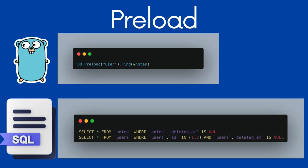Here it translates to two queries. The first one queries all entries from the notes table. Then internally, it collects all the user IDs from the fetched notes. Next, it does another query to users with the IDs retrieved from the last query. In this case, there are only two IDs: one and two.